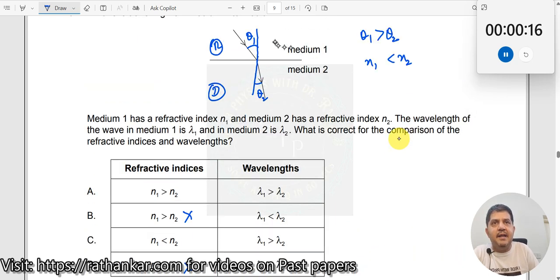Speed in these two media, here if it is v1 and this is v2, definitely v1 will be greater than v2. In rarer medium, velocity is higher.